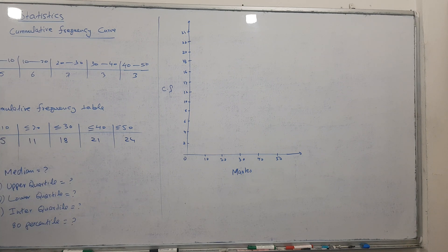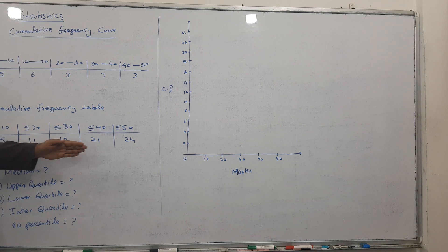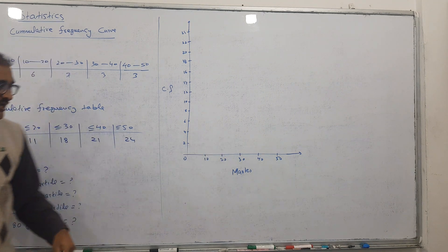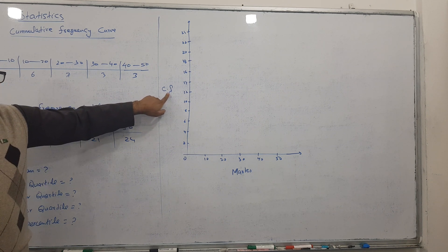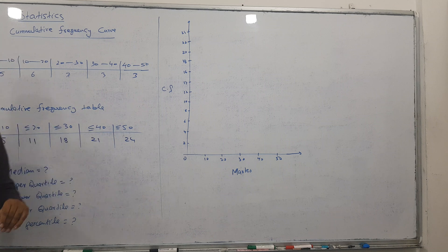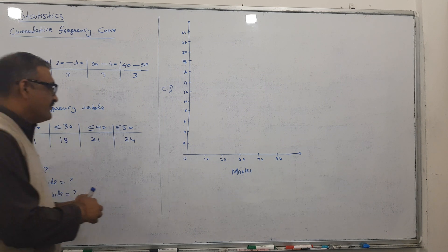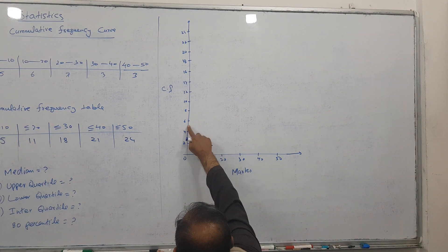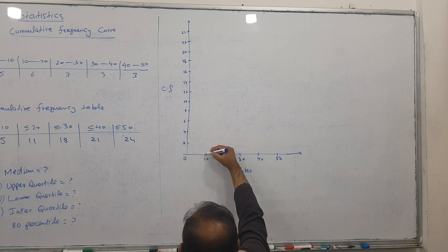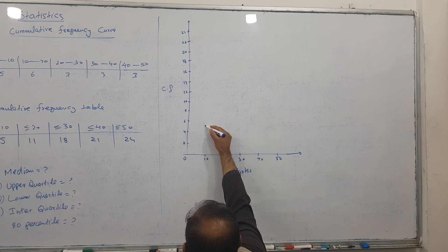Now let's talk about the plotting technique. Marks go along the x-axis, and the cumulative frequency (CF) goes along the y-axis. So for the first point: 10 on the x-axis and 5 on the y-axis — 5 is in the middle here, so I get the first point.